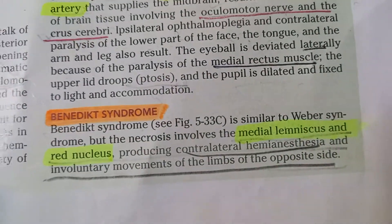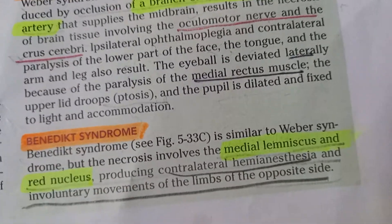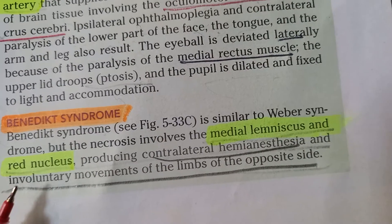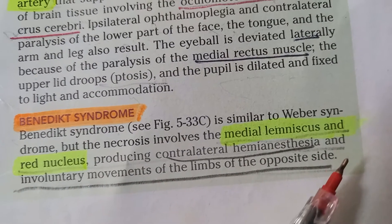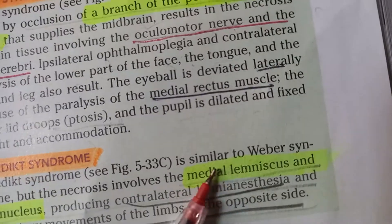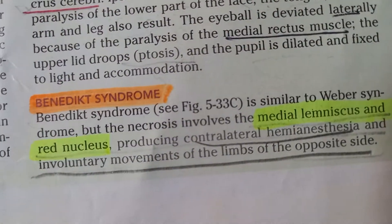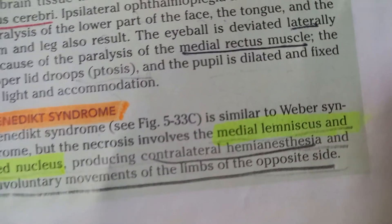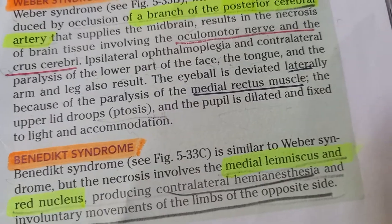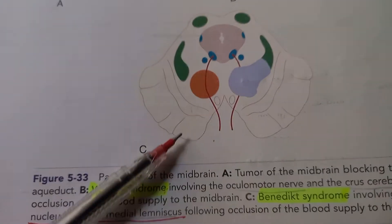Benedict syndrome is similar to Weber syndrome, but necrosis involves the medial lemniscus and red nucleus. This produces contralateral hemi-anesthesia due to damage to the medial lemniscus, and involuntary movement of all limbs on the opposite side due to damage to the red nucleus.